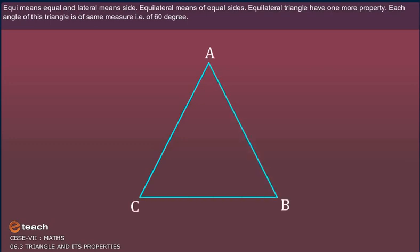Equi means equal and lateral means side. Equilateral means of equal sides. Equilateral triangles have one more property. Each angle of this triangle is of the same measure, that is 60 degrees.